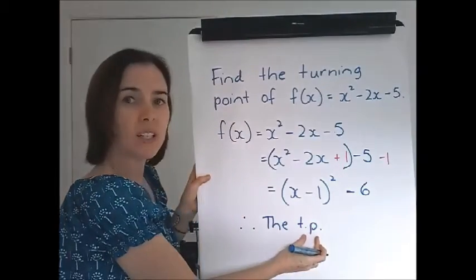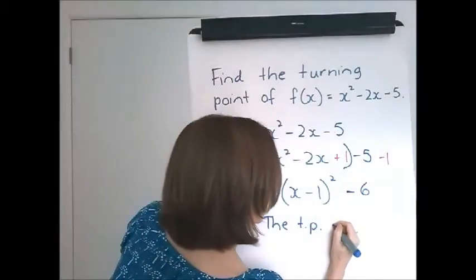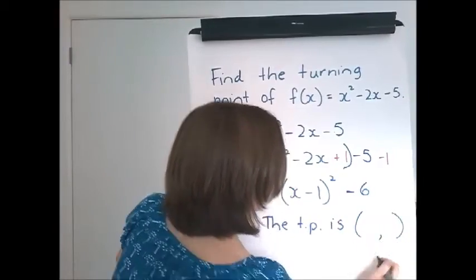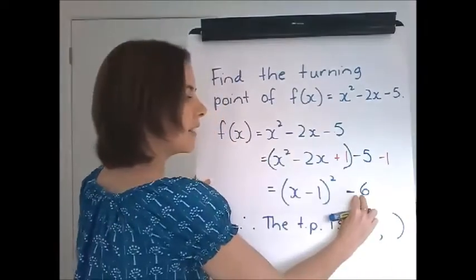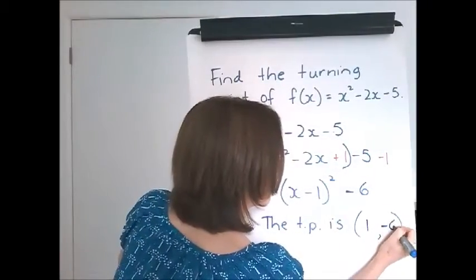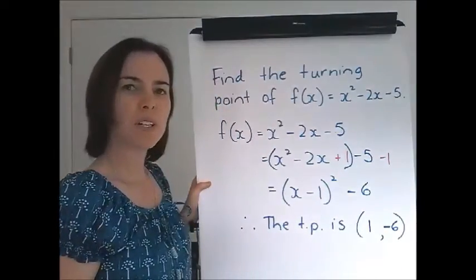Now the number in here changes sign, and the number here doesn't. So the turning point is 1, negative 6.